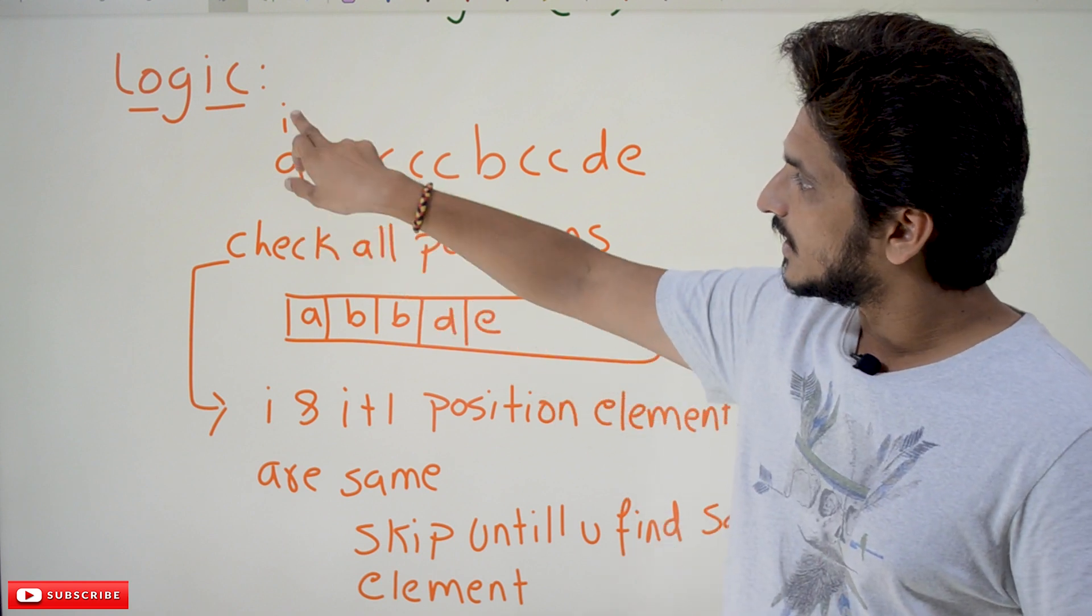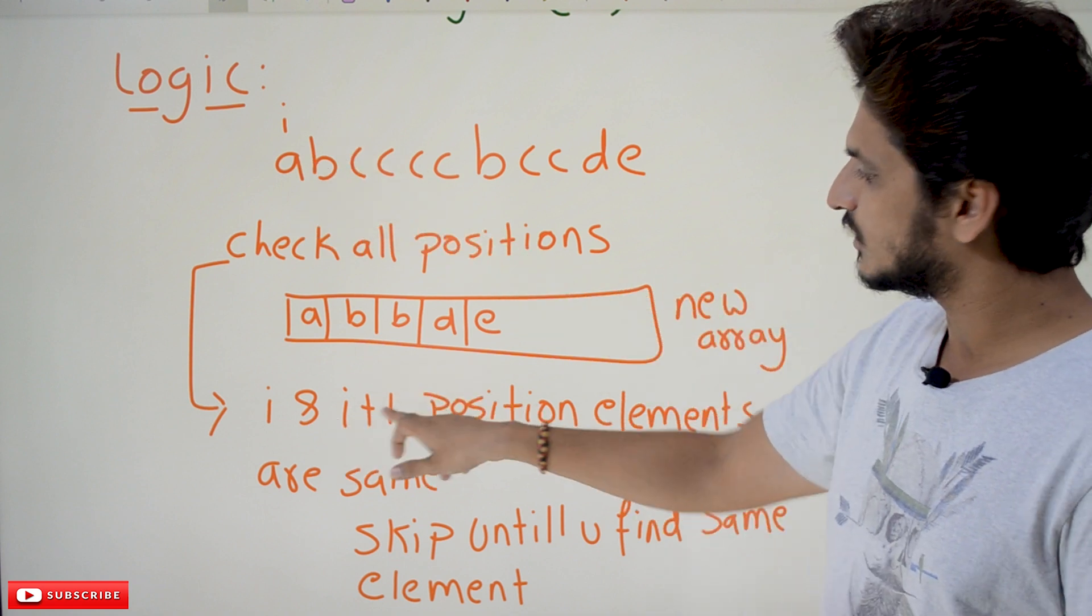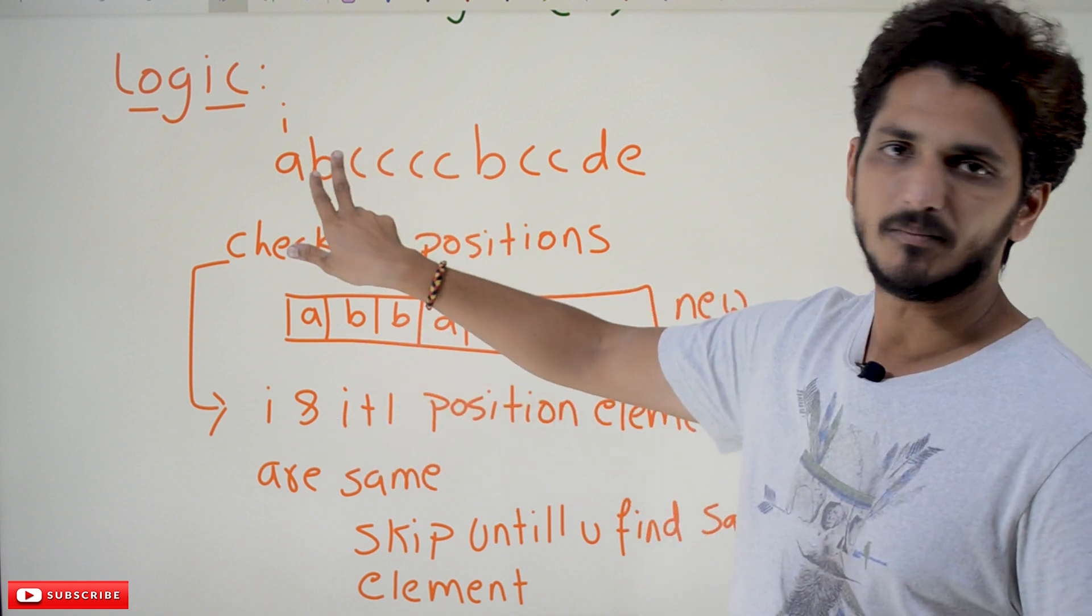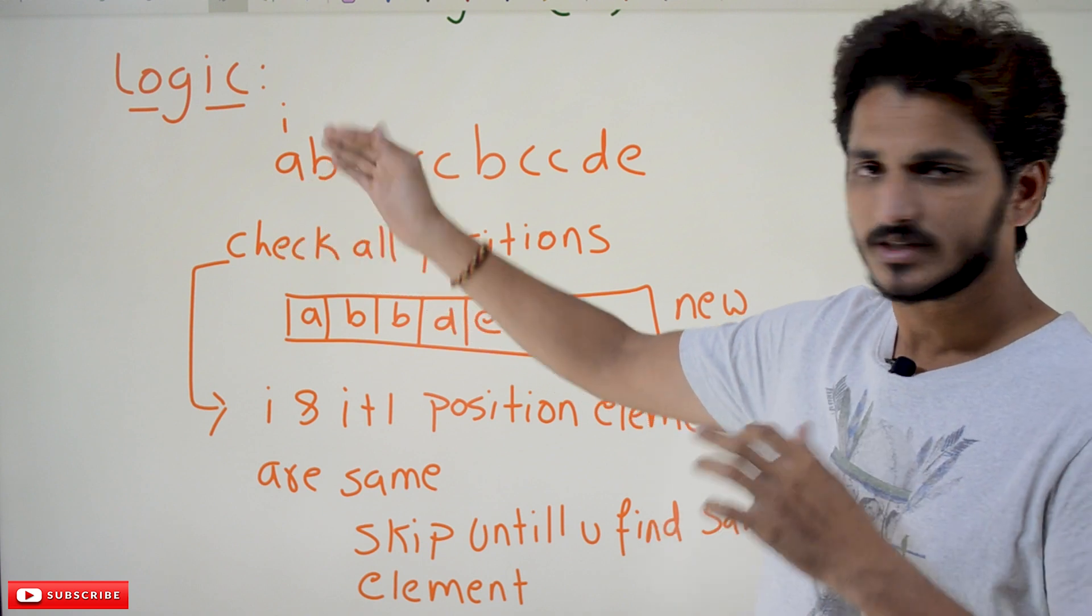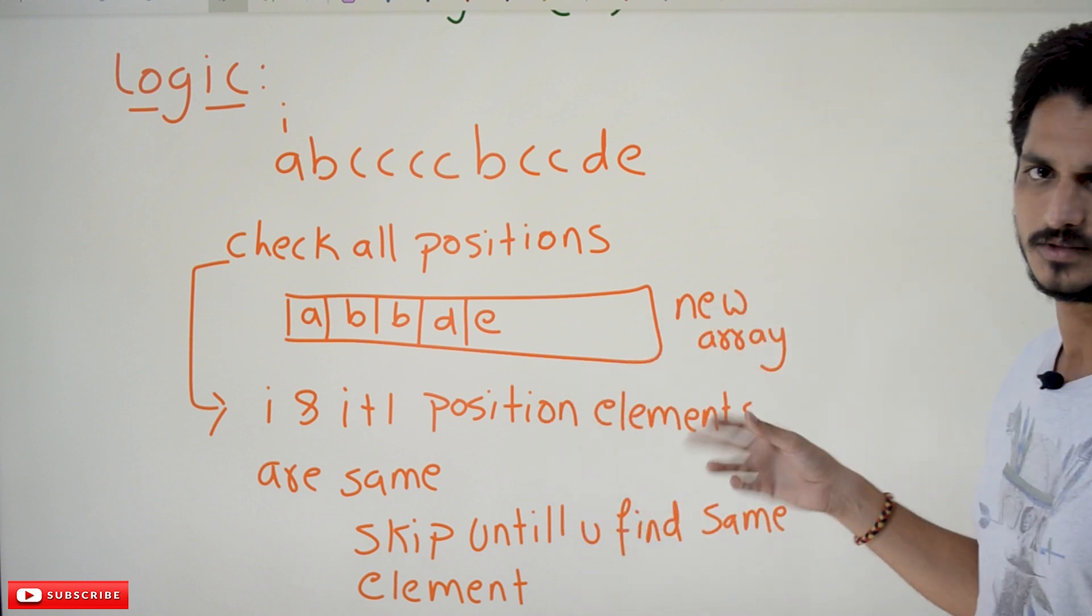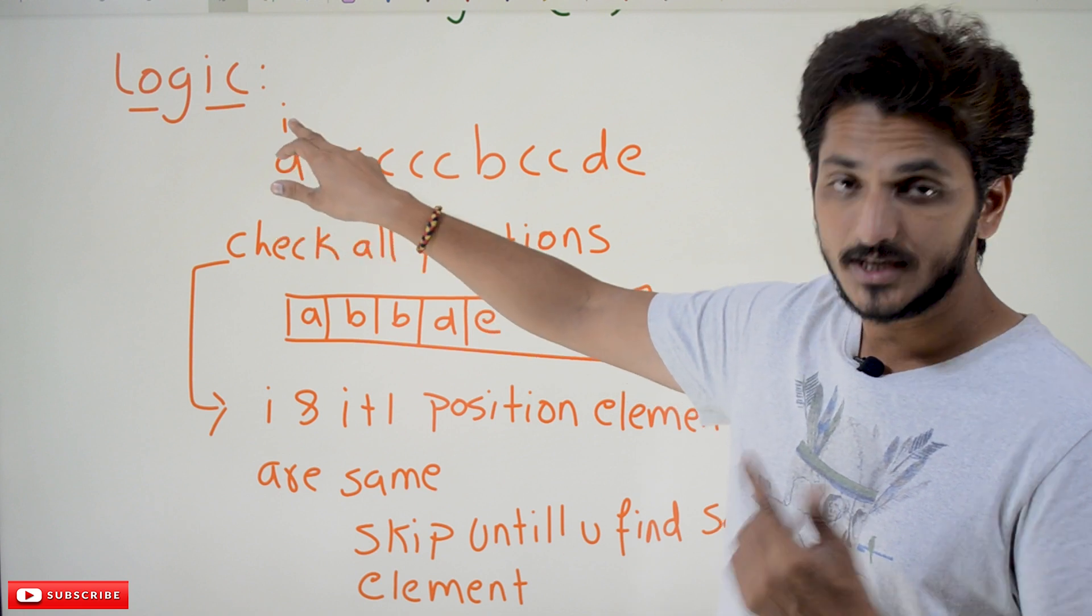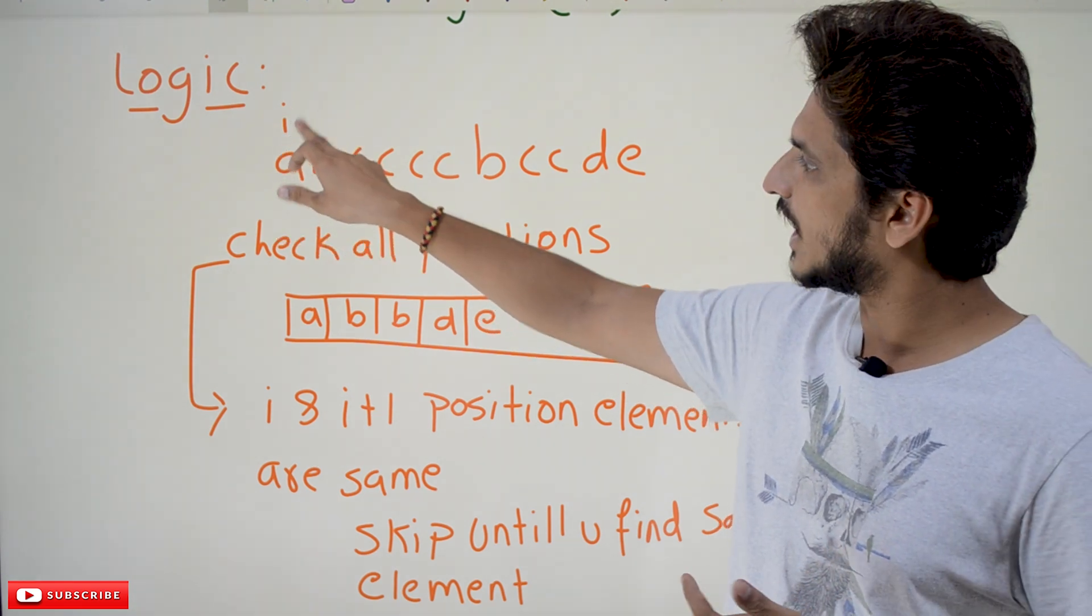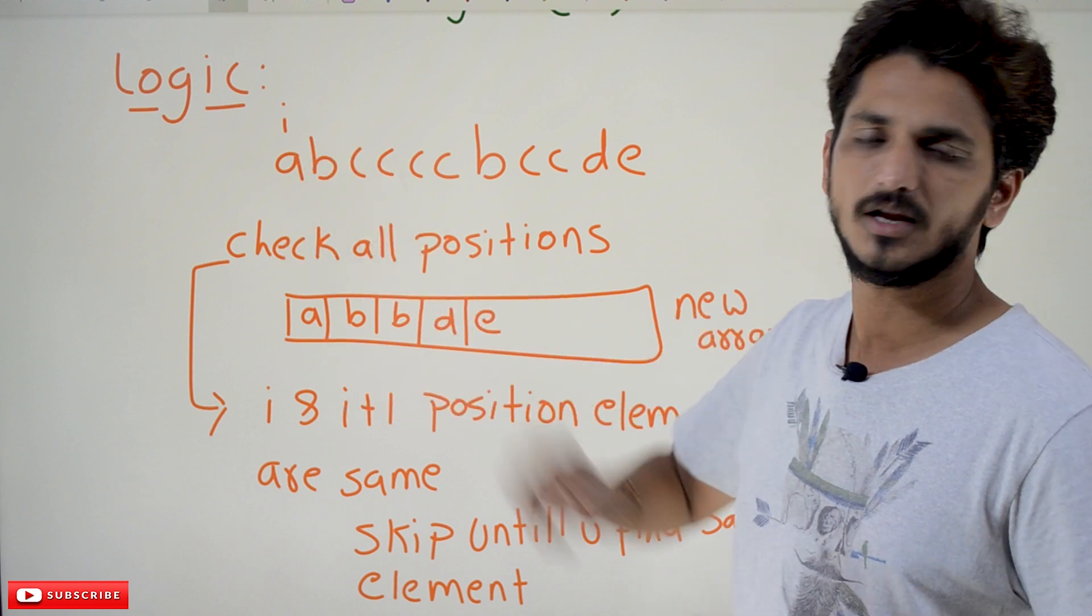So if the element that present in the ith position and the element present in the i plus one position, if both are same, don't allow them to copy, otherwise copy them in the new space. We are going to use a new space, new array. So a, i initially starts from the starting position, ith position, i and i plus one position, they are not same. So copy it in down.